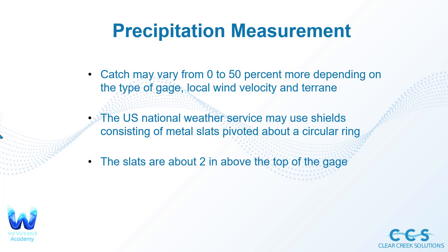In a software package like WWHM 2012, there is a rain gauge that encompasses a large portion of a land-use area, and there's also a rain gauge factor depending on where you click on the map. Elevation, wind, and other factors are taken into account to ensure correct rainfall data. The USDA National Weather Service may use shields consisting of metal slats pivoted about a circular ring to help catch the appropriate amount of rainwater, with slats about two inches above the top of the gauge.